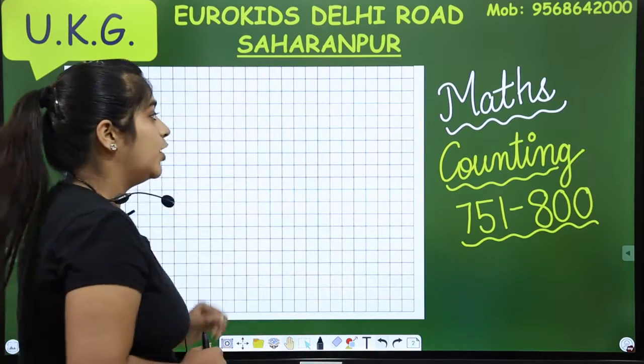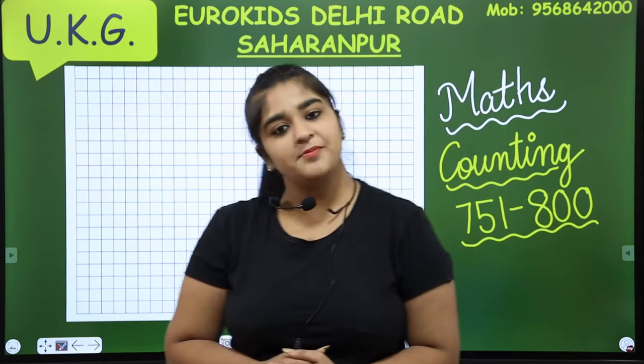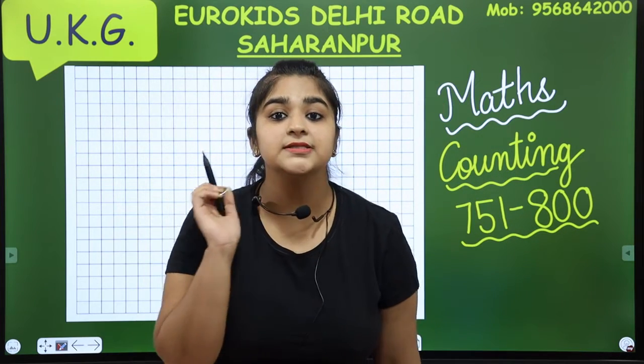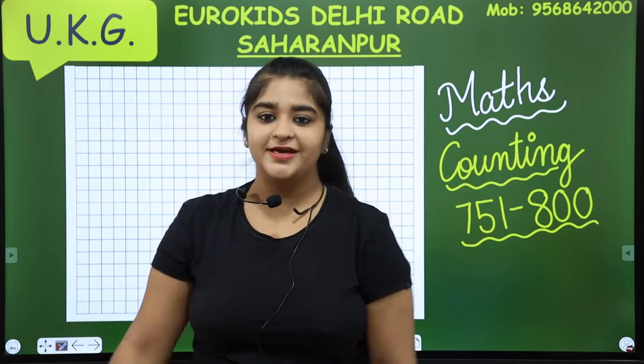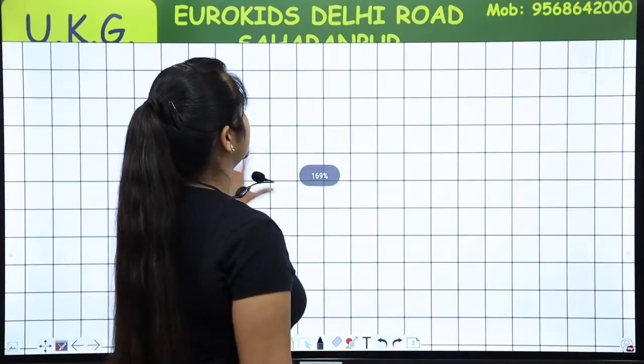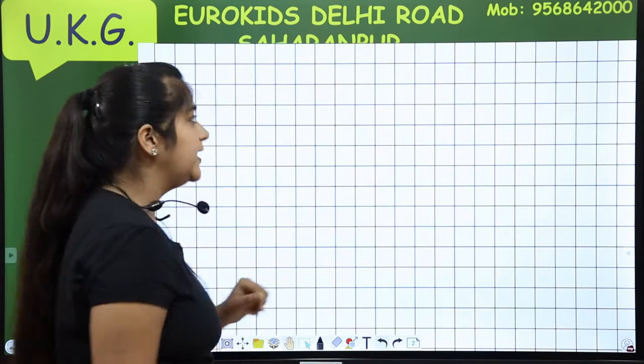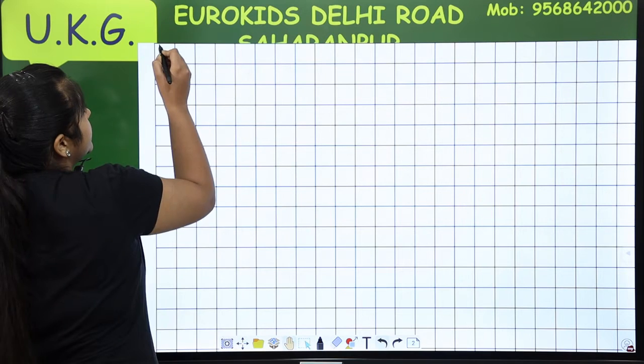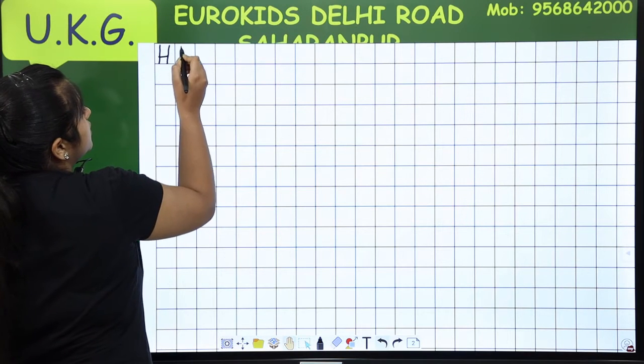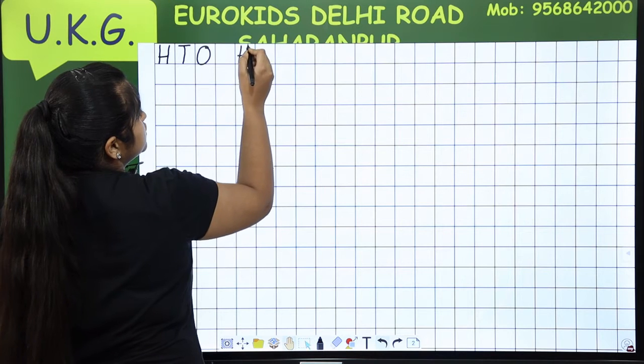Let's begin. You all have to open your maths classwork notebook and you have to write with mom only and with pencil, not with a colorful pen, okay? Now, mom is going to start, but first of all, you have to write HTO on the top of every line.